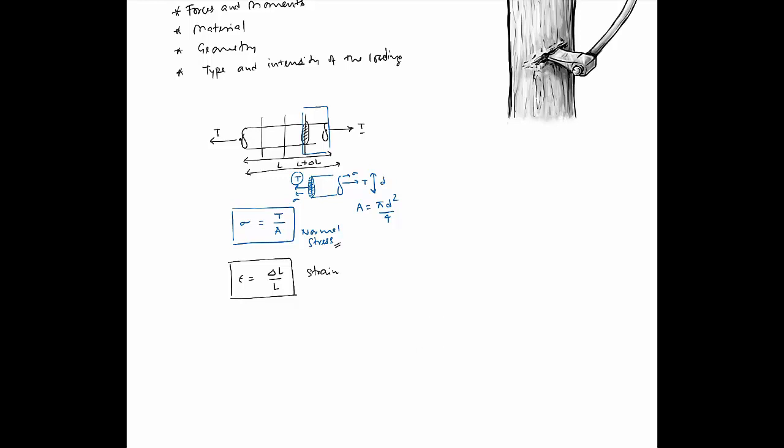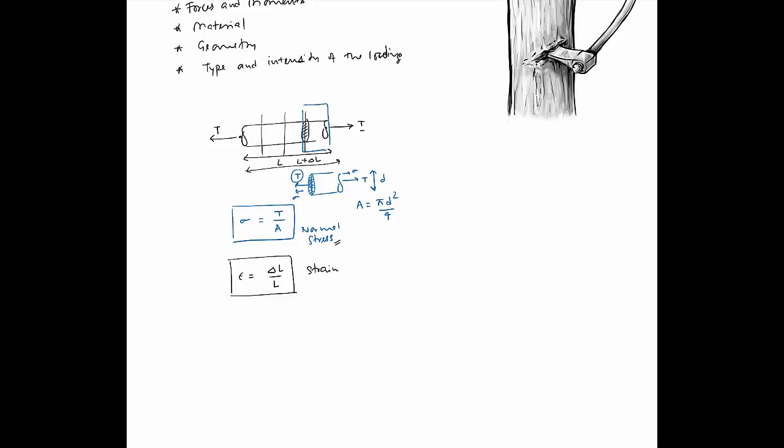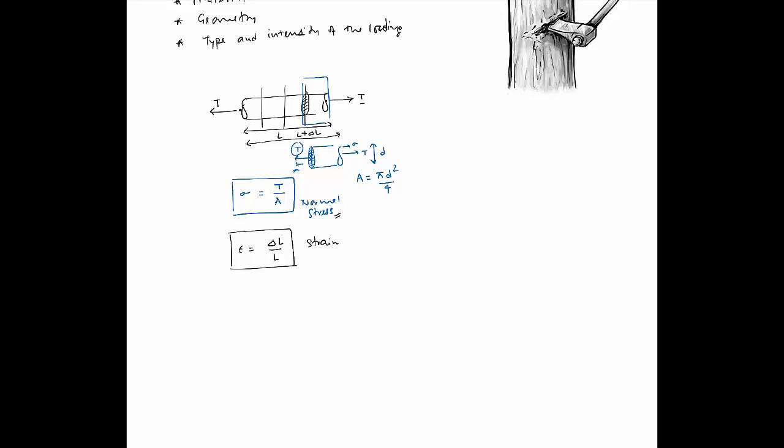This strain comes about because there are normal stresses. There is elongation in the longitudinal direction which means that if it elongates then it has to contract in the transverse direction. So in the transverse direction there could be contraction. If the original diameter was D then it could go from D to D minus delta D. The change in the transverse direction is delta D.